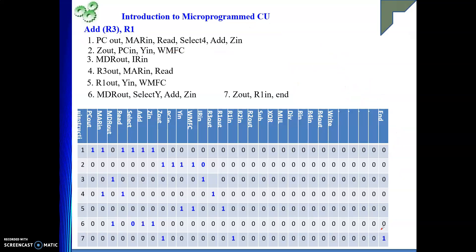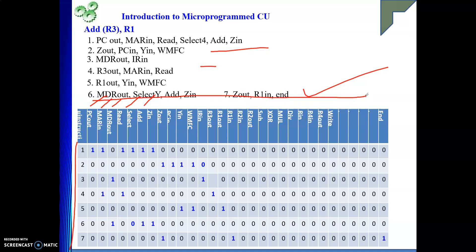Let me explain again how we get a micro routine for one instruction sequence. Each of these steps is a micro instruction. In a micro instruction we reserve bit positions for each signal — for example, PC out, MAR in, MDR out, read, write, and so on. You need not remember any particular sequence; you can write them in any order since we are not designing for a specific processor. For step number 1, wherever PC out is present the value is 1, MAR in is also 1, but MDR out is not present so it is 0. For the select line: if we need to select 4, the select line value is taken as 1.